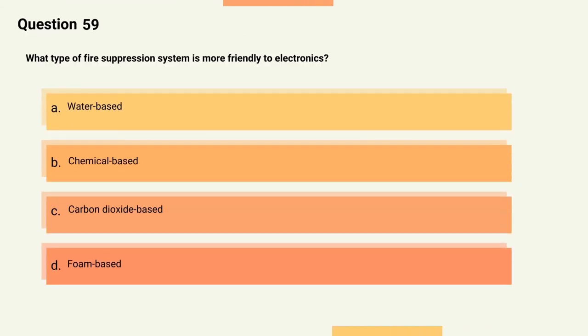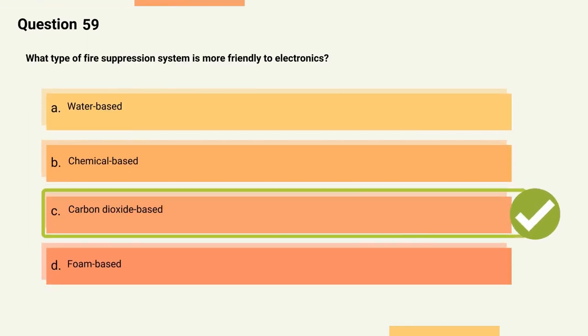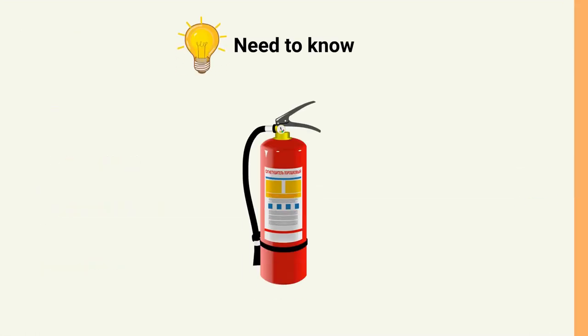Question 59: What type of fire suppression system is more friendly to electronics? Options: A) Water-based, B) Chemical-based, C) Carbon dioxide-based, D) Foam-based. The correct answer is Option C, Carbon dioxide-based. Explanation: Gas-based fire suppression systems are more friendly to electronics but can be toxic to humans.